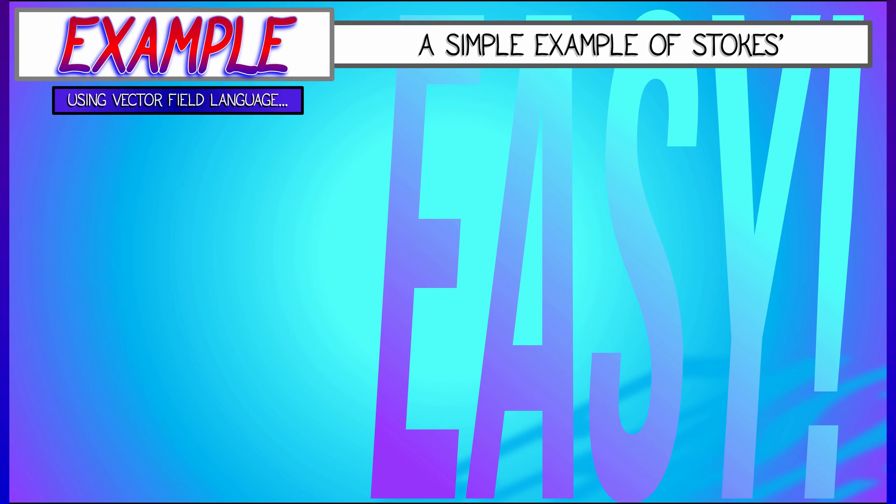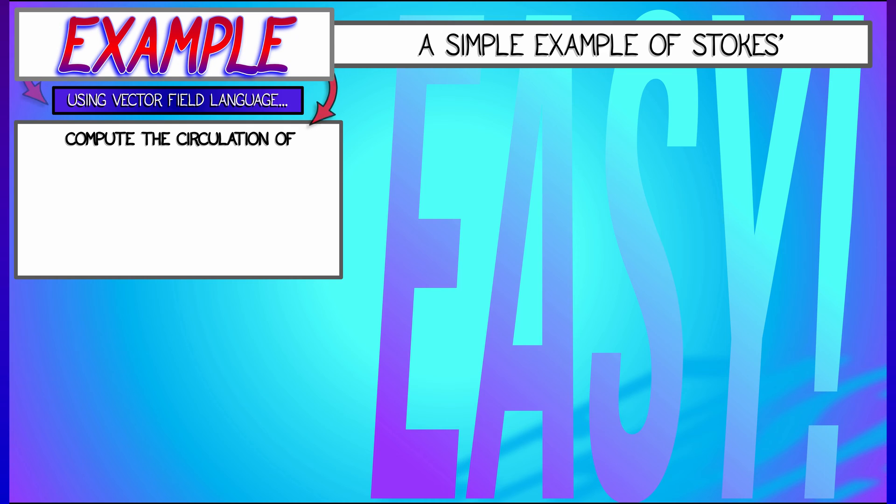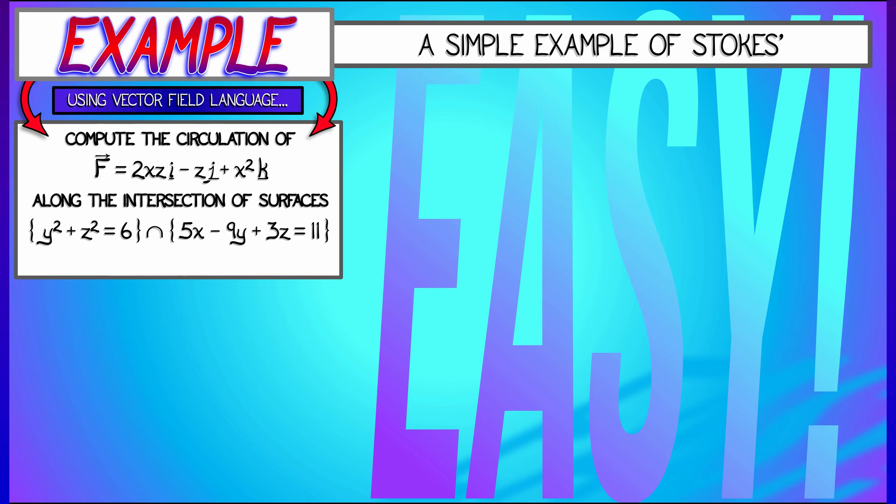Let's say that you're given a vector field f that is of the form 2xz i minus z j plus x squared k, and you want to compute the circulation of this along the intersection of two surfaces in 3D. These surfaces are y squared plus z squared equals 6, and 5x minus 9y plus 3z equals 11.